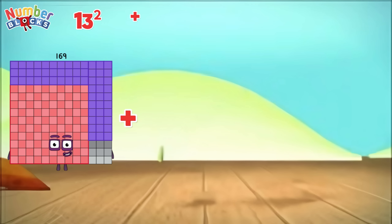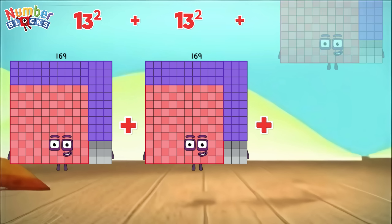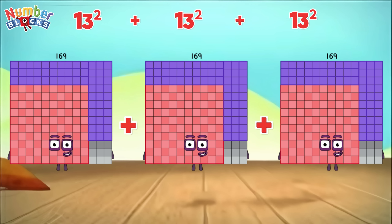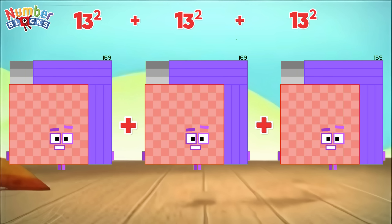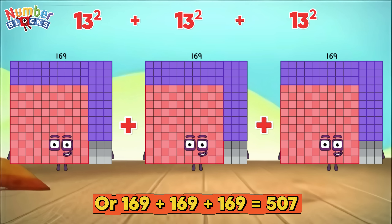13 square plus 13 square plus 13 square, or 169 plus 169 plus 169, is equals to 507.